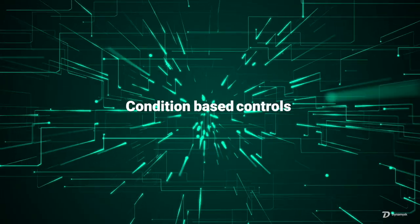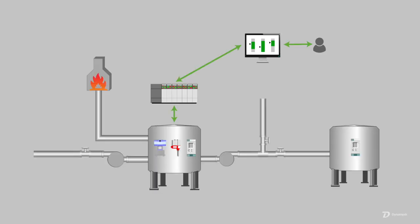How about condition-based controls? Operators are often faced with the same decision paths multiple times in process controls. To control a level in a vessel, for example, they may need to control the inflowing product and the outflowing product. To keep it simple, we'll say the outflowing product has two paths — one to a flare and the other to a vessel downstream. As the upstream vessel fills and reaches its optimum operating level, the outflow to the flare begins. When the downstream vessel or process is ready, the operator starts to close the flare control valve and open the control valve to the downstream vessel. It's fairly common in a startup scenario.